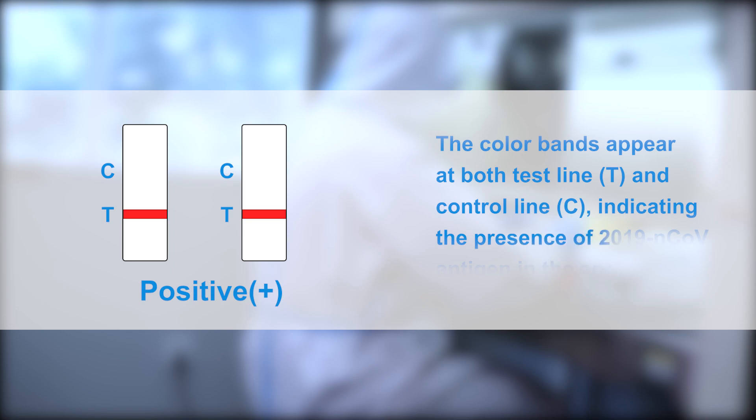Positive results: The colored bands appear at both test line T and control line C, indicating the presence of 2019 novel coronavirus antigen in the specimen.